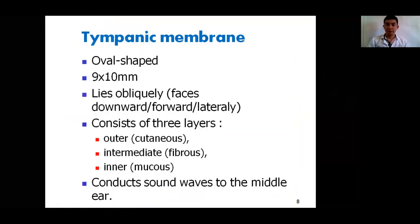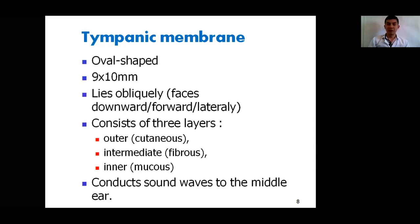The tympanic membrane is a thin, transparent, oval-shaped membrane measuring 9 to 10 millimeters. It lies obliquely, facing downward, forward, and laterally. The tympanic membrane consists of three layers, embryologically developing from three germ layers: the outer cutaneous layer, the intermediate fibrous layer, and the inner mucous layer. The tympanic membrane receives and conducts sound waves to the middle ear.